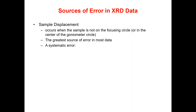We will discuss each type of error one by one and then suggest possible solutions for the reported errors in the data. The first type of error in XRD data is called sample displacement. Sample displacement occurs when the sample is not on the focusing circle, which we discussed in our previous lecture.